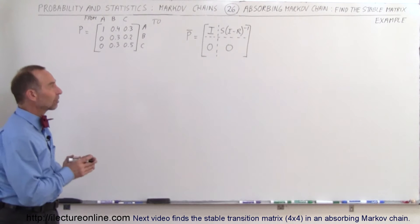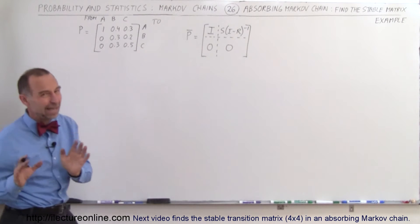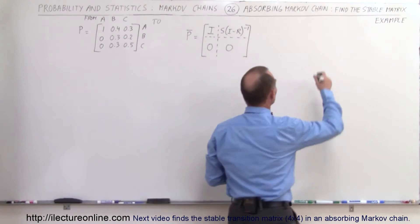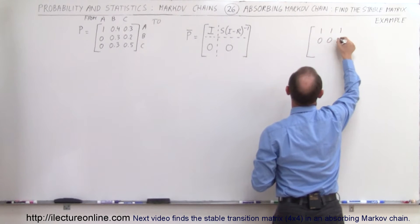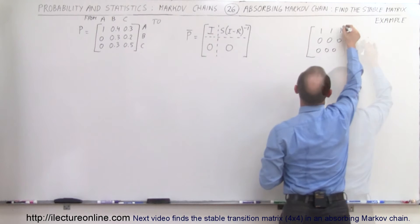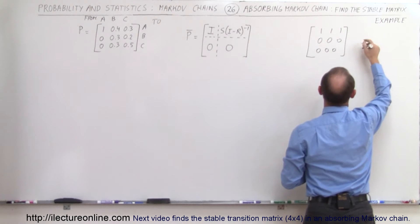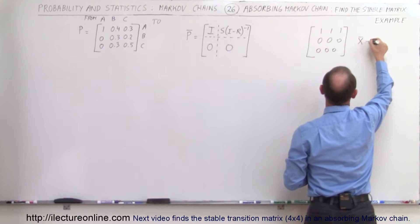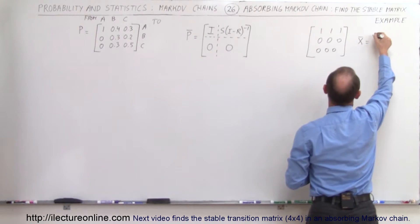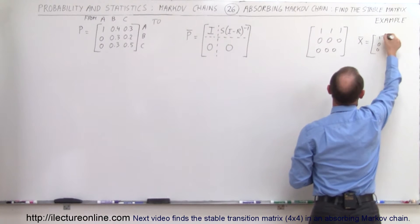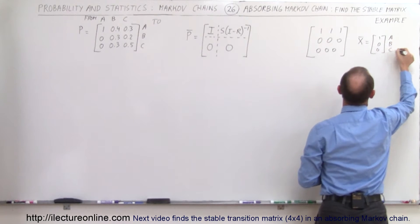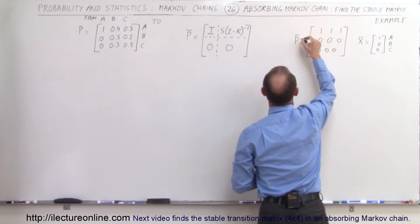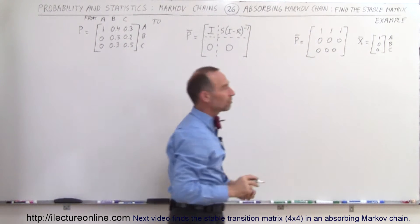How do we find the stable matrix? We already have an inkling that the stable matrix should look like 1, 1, 1, 0, 0, 0, 0, 0, 0 — and that the stable distribution matrix will be a one and three zeros for the A, B, and C states. So this is what we call the stable transition matrix.